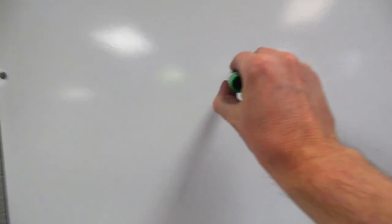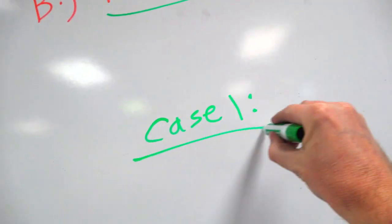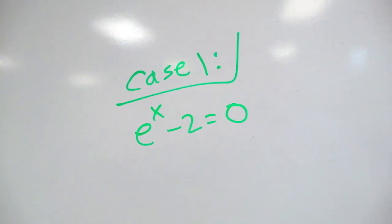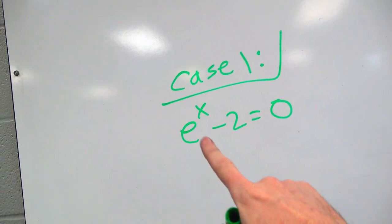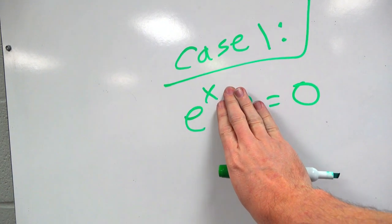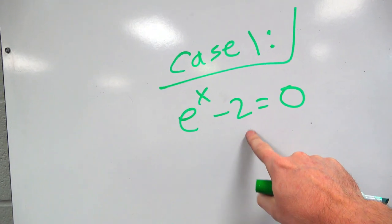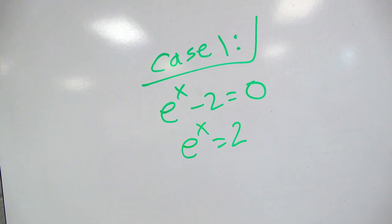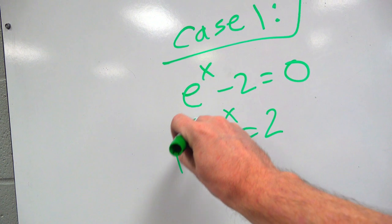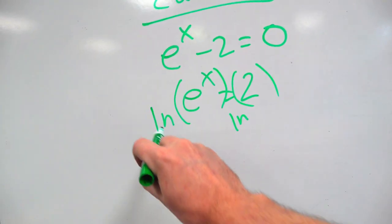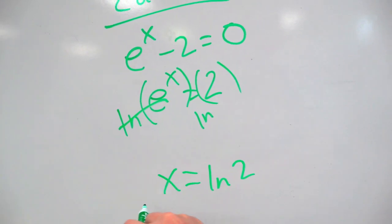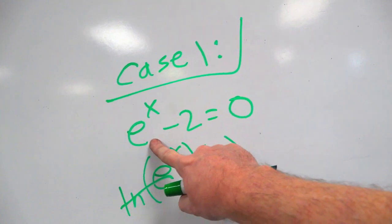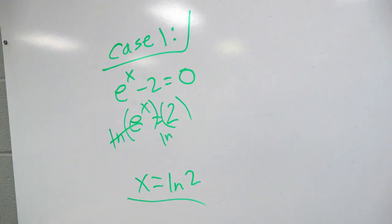Case 1: set your derivative equal to 0. Can e to the x minus 2 equal 0? Remember — exponential growth can never be 0, but exponential growth shifted down 2 can be 0. Add 2 to both sides: you get e to the x equals 2. Now take the natural log of both sides, just like back in Integrated 3. You get cancellation: x equals natural log of 2. That's the result of Case 1 — that is called a critical number. There is no Case 2, because there's no place an exponential would be non-existent. And there is no Case 3 because it's only for piecewise functions.